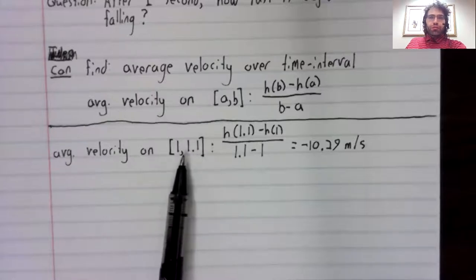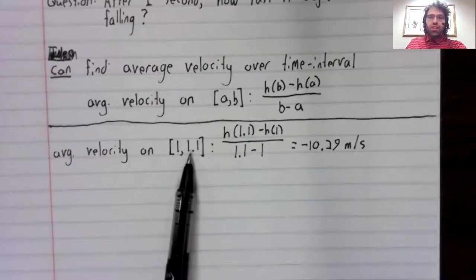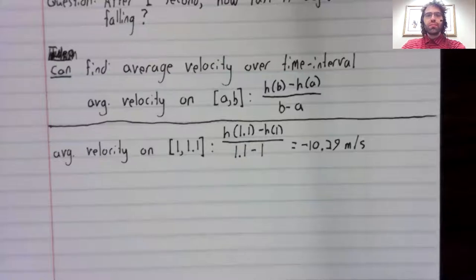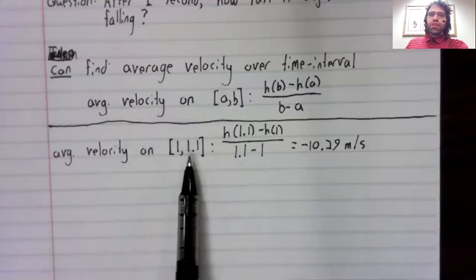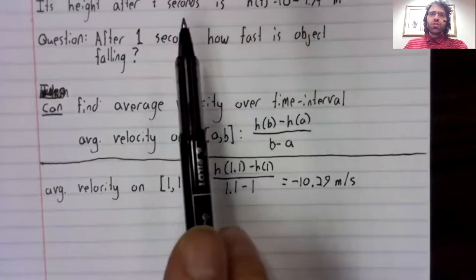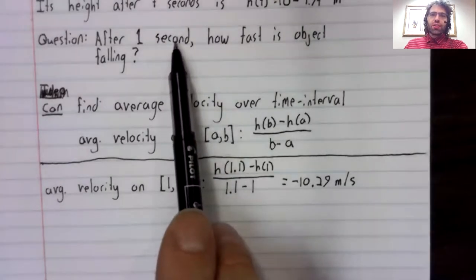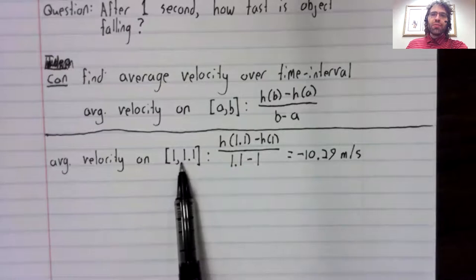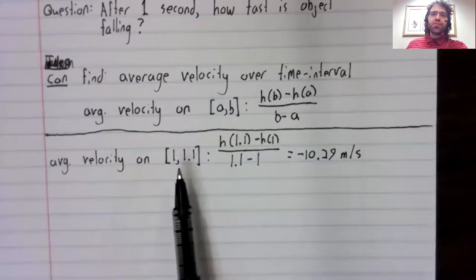And the average velocity on the interval should approximate either of those velocities. With that as our idea that this average velocity should approximate this exact velocity, because not a lot of acceleration can happen in the span of 0.1 seconds.